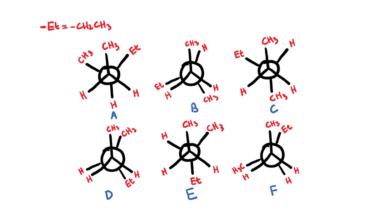So let's have a look at this example. If we look at letter A, we can see that that represents a staggered Newman projection. As a matter of fact, we see that A, E, and C all represent staggered Newman projections. If you look at letters D, B, and F, they represent eclipsed conformations.